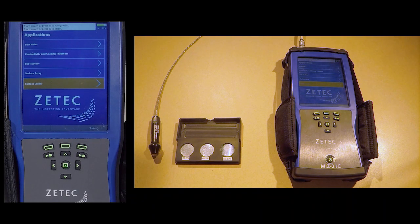The calibration wizard and intuitive interface makes the MIS-21C easy to use for conductivity measurements. In order to properly calibrate the MIS-21C, an approved conductivity standard is needed in the IACS range of the material to be tested, along with an appropriate size probe.